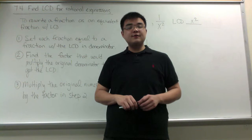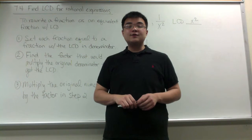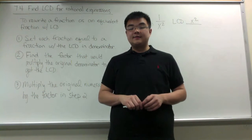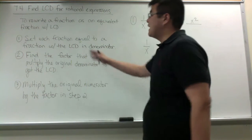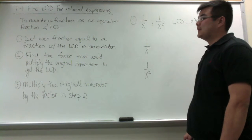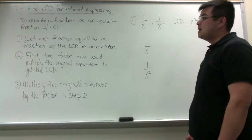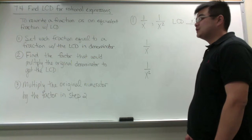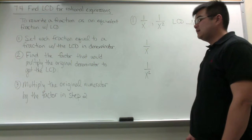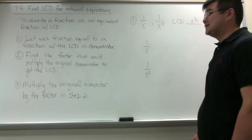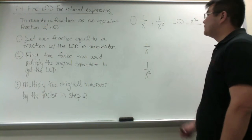In the second part of the notes for section 7.4, we will be going over how to rewrite a fraction as an equivalent fraction with the LCD. The first step is to set each fraction equal to a fraction with the LCD in the denominator. Then we are going to find the factor that would multiply the original denominator to get the LCD. Lastly, we are going to multiply the original numerator by that factor.